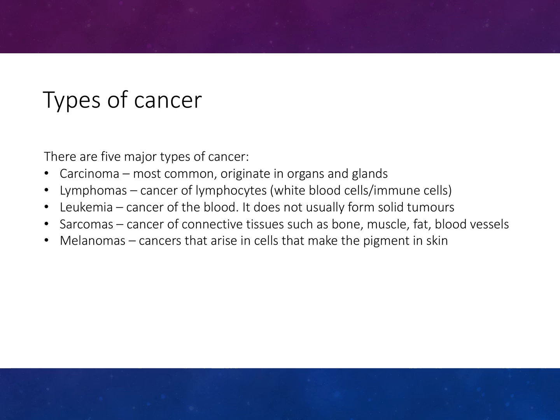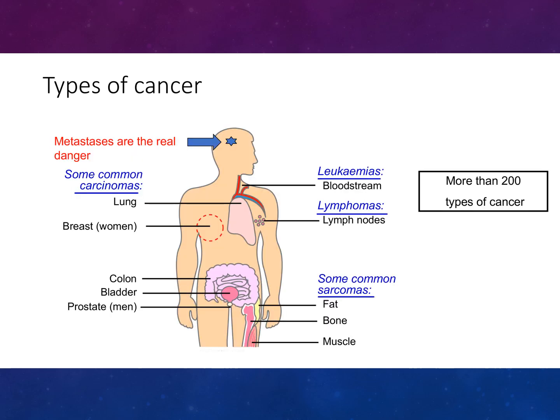There are different types of cancers: carcinoma, lymphoma, leukemia, sarcoma, and melanoma. Carcinoma is the most common and originates in organs and glands. Lymphoma is cancer of lymphocytes — white blood cells and immune cells. Leukemia is cancer of the blood and does not usually form solid tumours. Sarcoma is cancer of connective tissues such as bone, muscle, fat, and blood vessels. Melanomas are cancers arising in cells that make the pigment in skin.